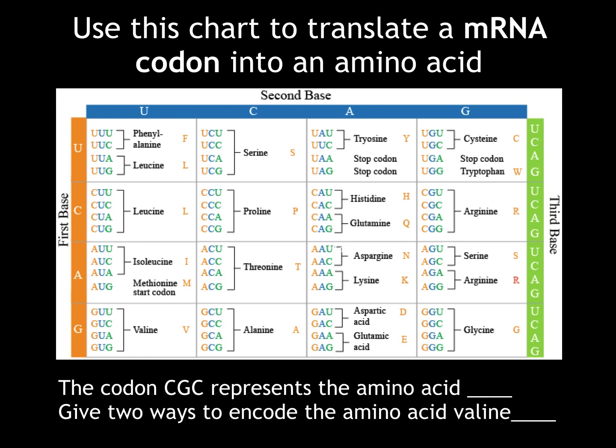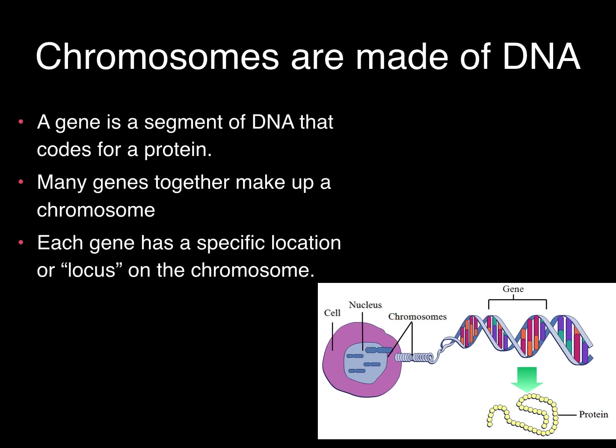A specific segment of DNA that codes for a protein is called a gene. Many genes together make up a chromosome, and each gene has a specific location or locus on the chromosome.